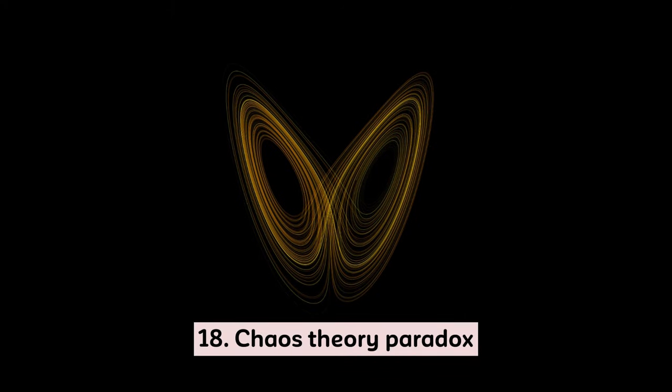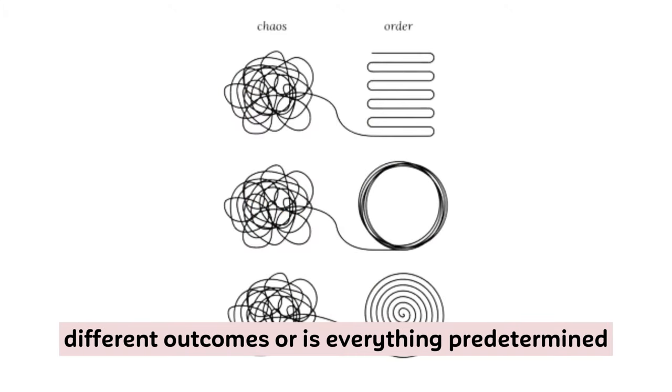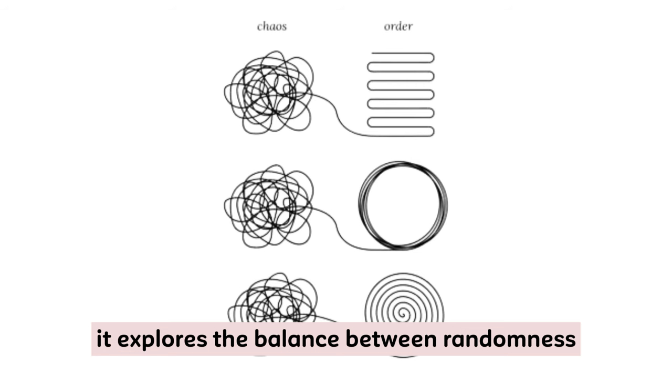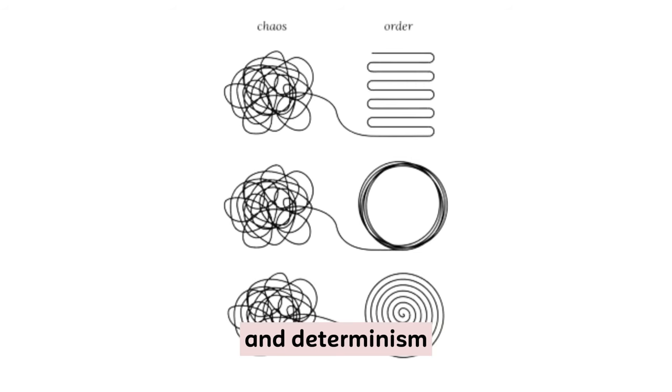18. Chaos Theory Paradox. Can small changes lead to drastically different outcomes, or is everything predetermined? It explores the balance between randomness and determinism.